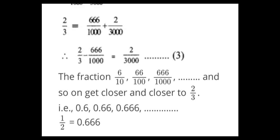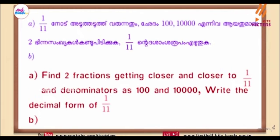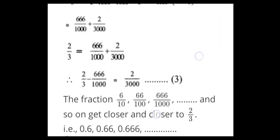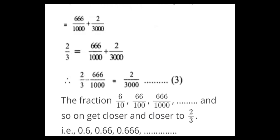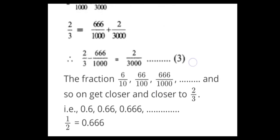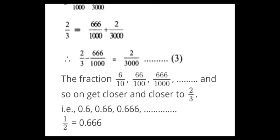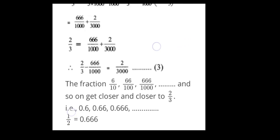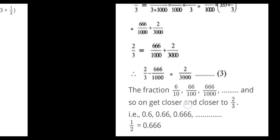Then our decimal form — dashamsha rubam — what is the name? 2 by 3. The decimal form is 0.6, 0.66, 0.666. And 10 by 3 is equal to 0.666.